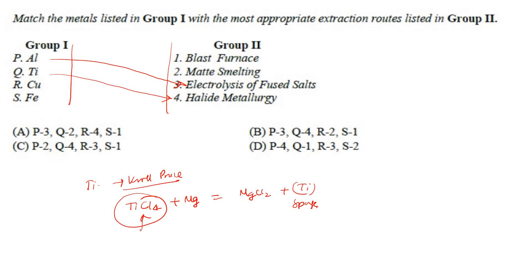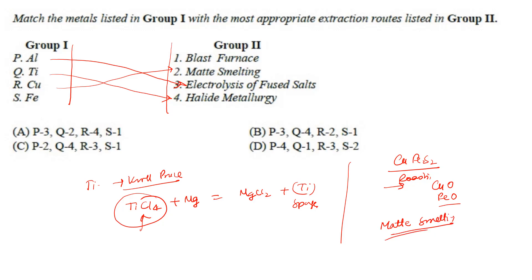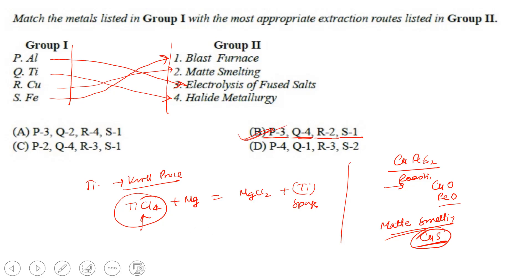Copper comes from CuFeS2 ore. We first do roasting to form copper oxide and FeO, then proceed to matte smelting to produce matte of CuS. And iron is manufactured using the blast furnace. So P (aluminum) matches with 3, Q (titanium) matches with 4, R (copper) matches with 2, and S (iron) matches with 1. Option B is the correct answer.